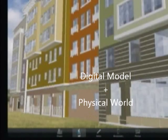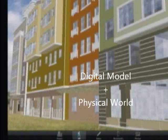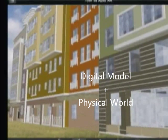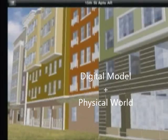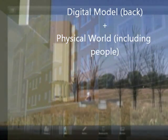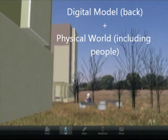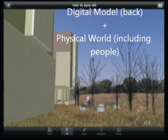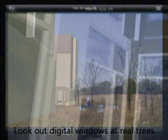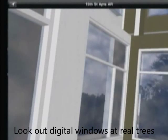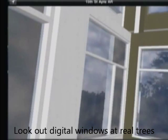Augmented reality, or AR for short, is when you overlay something digital onto the real world. You can do this to preview a house before it is built, for example, to make sure you're pleased with the placement and even look out the windows. But how does this technology work?